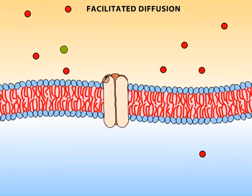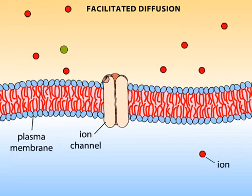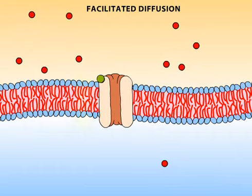Some membrane proteins form channels that allow polar or charged substances to cross the membrane. In this example of facilitated diffusion, a channel allows specific ions to pass. These ion channels are gated and open and close by a variety of mechanisms. Here, a stimulus molecule causes the channel to open.